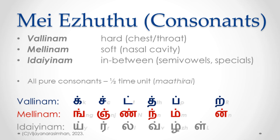The consonants, Mei Erut, are classified into three groups called Inam in Tamil: Vallinam, Melinam, and Edainam. Vallinam literally means hard, Melinam means soft, and Edai means in between. So Edainam is in between hard and soft.